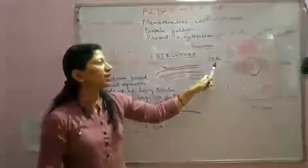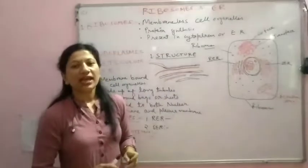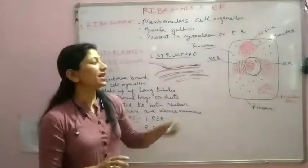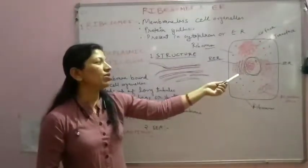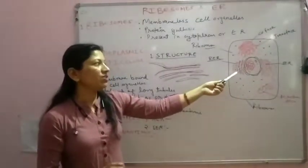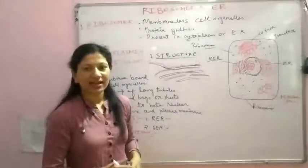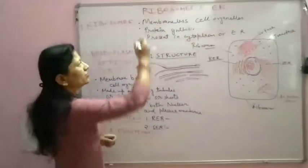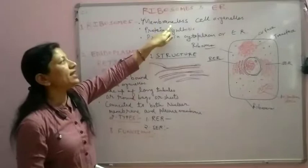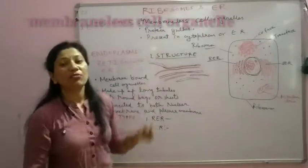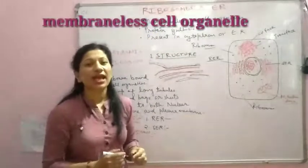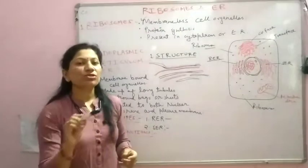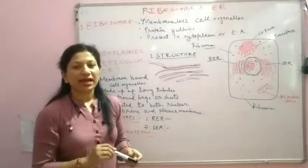The endoplasmic reticulum is called 'rough' because ribosomes, which are present on its surface like granules, give it a rough structure. Now, one more important point: ribosomes are membrane-less cell organelles. You should know that most cell organelles in the cell have a membrane around them, just like the plasma membrane is the outer covering of the cell.